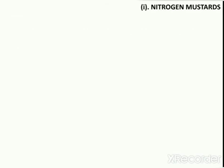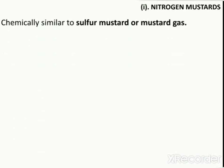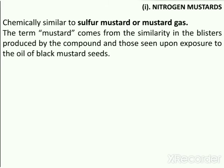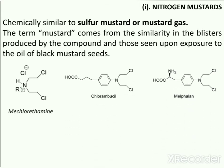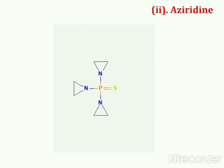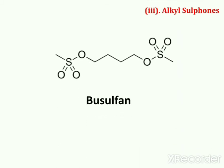The first subcategory of alkylating agents is nitrogen mustards. These are compounds chemically similar to sulfur mustard or mustard gas, developed and used in World War I. The term mustard comes from the similarity in blisters produced by the compound and those seen upon exposure to the oil of black mustard seeds. Drugs in this category include mechlorethamine, chlorambucil, melphalan, cyclophosphamide, and ifosfamide. The second subcategory is aziridine, and the third is alkyl sulfonates, which includes busulfan.